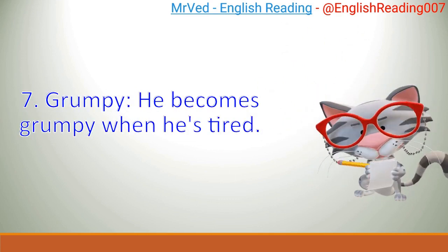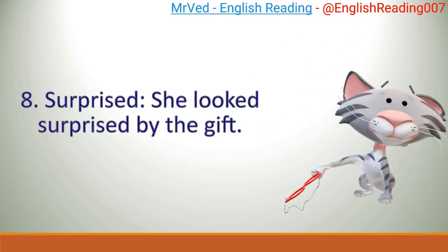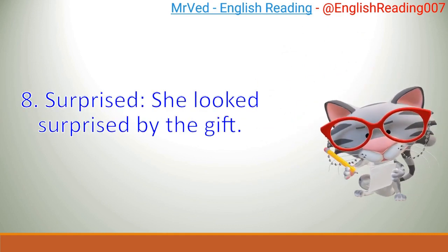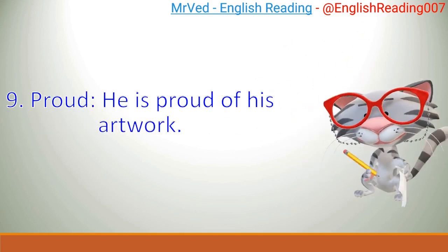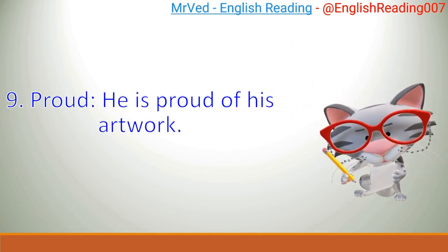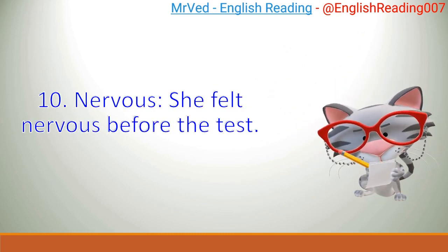7. Grumpy. He becomes grumpy when he's tired. 8. Surprised. She looks surprised by the gift. 9. Proud. He is proud of his artwork. 10. Nervous. She felt nervous before the test.